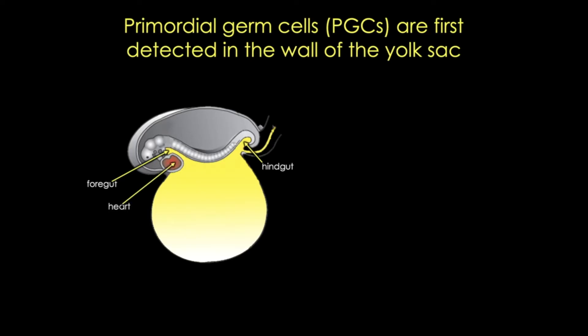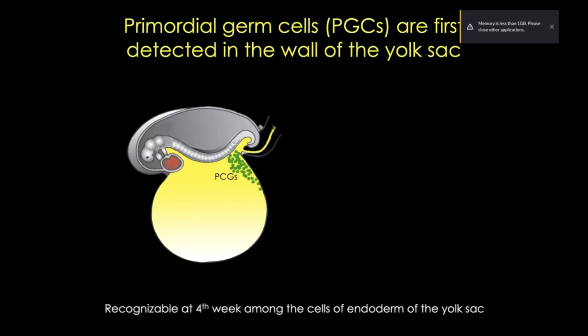You can also see the heart in its proper location as a result of head folding after gastrulation. Now, the primordial germ cells that I've colored here in green form at the end of week two, probably from the posterior epiblast, and then they migrate through the primitive streak during gastrulation and sort of just wander into the yolk sac at around week three. They're not recognizable until week four, but by then you can recognize them by their distinct morphology and by molecular markers.